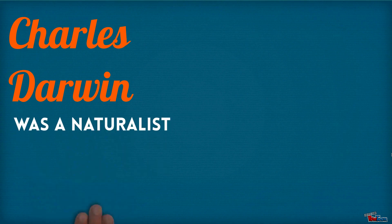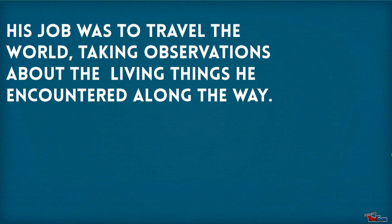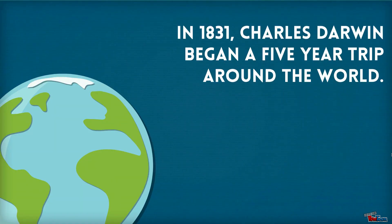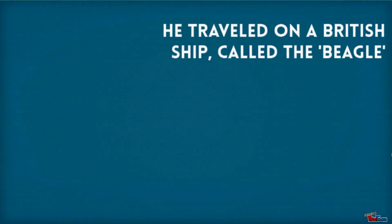Charles Darwin was a naturalist. His job was to travel the world taking observations about the living things he encountered along the way. In 1831, Darwin began a five-year trip around the world. He traveled on a British ship called the Beagle.